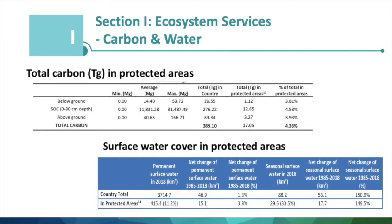Next we look at ecosystem services — total carbon in protected areas, including total below-ground and above-ground carbon in the country, as well as total carbon captured by protected areas. We can also look at surface water cover and protected areas, including total number and hectares of areas important for water, and total hectares and percent of areas important for water that are under protection in the country.